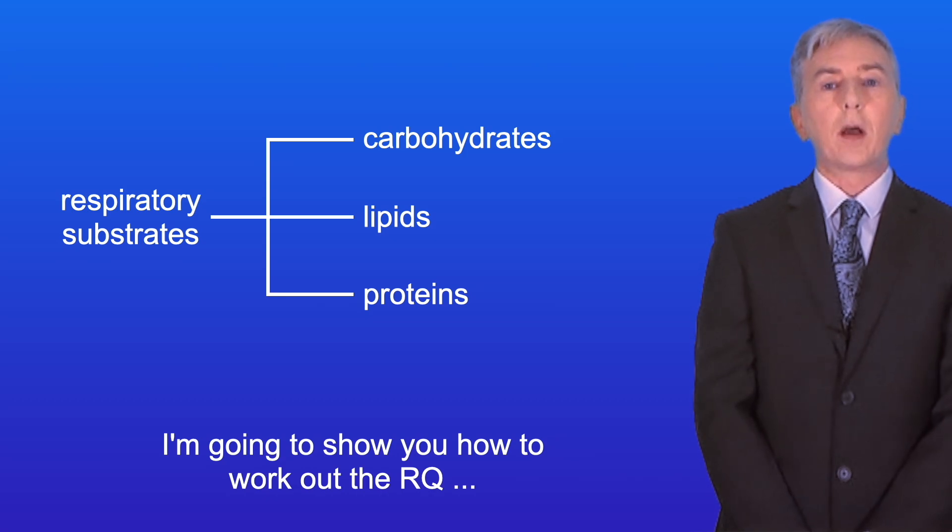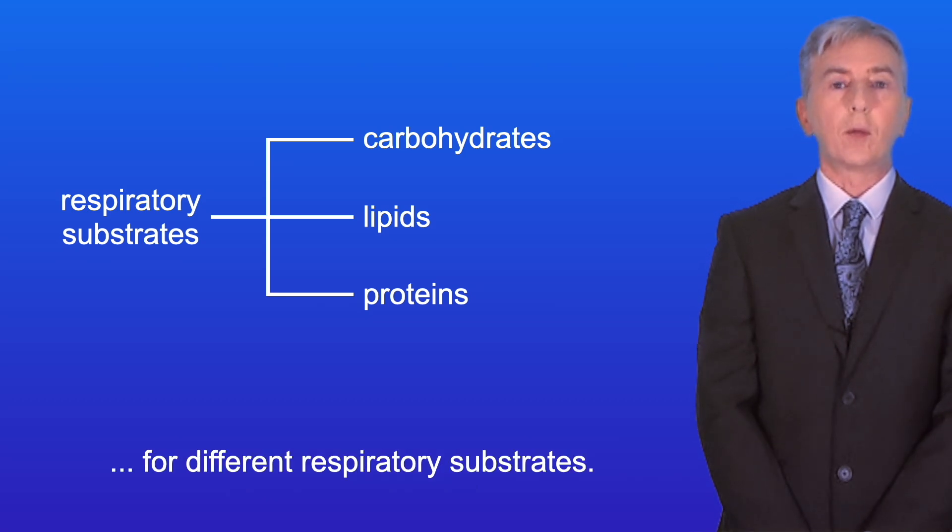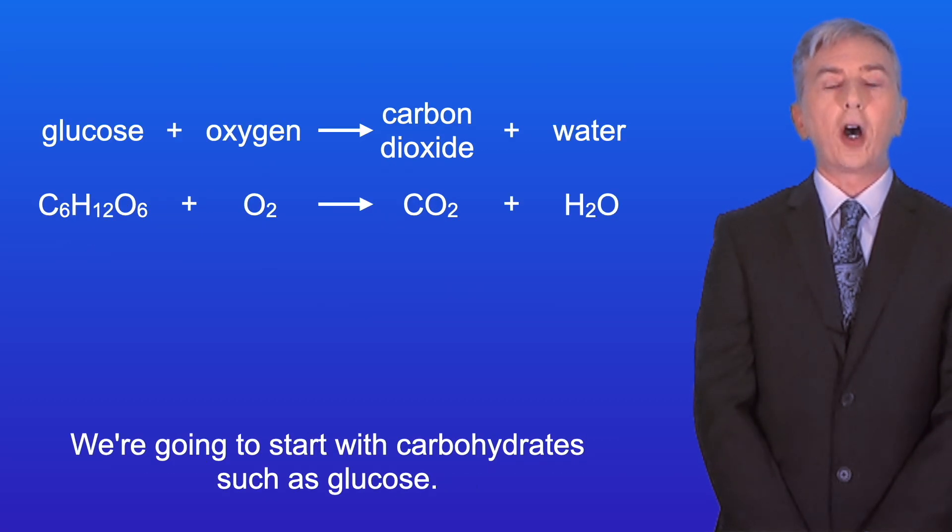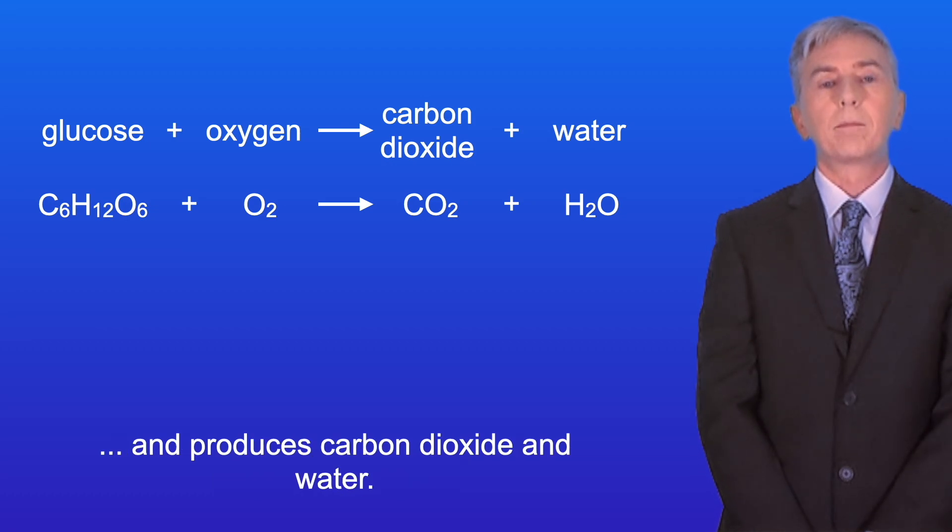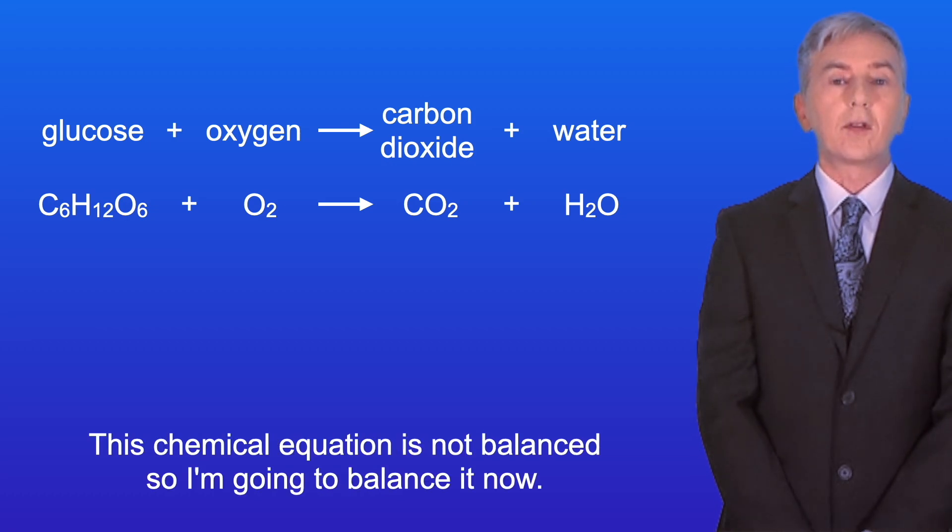I'm going to show you how to work out the RQ for different respiratory substrates. We're going to start with carbohydrates such as glucose. The aerobic respiration of glucose requires oxygen and produces carbon dioxide and water. This chemical equation is not balanced, so I'm going to balance it now.